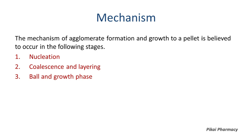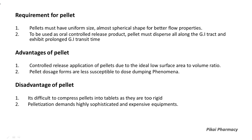In the ball growth phase, agglomeration of particles slows down. Regarding the requirements of a pellet: a pellet must have uniform size and be almost spherical in shape for better flow properties, as spherical shape improves rheological flow properties. Pellets are used as oral controlled-release products and must disperse along the GI tract with prolonged GI transit time.